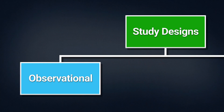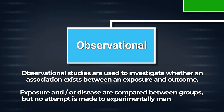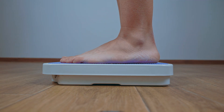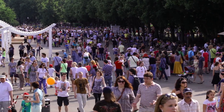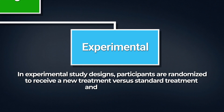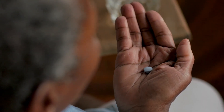Observational and experimental studies differ in a significant way. Observational studies investigate whether an association exists between an exposure and outcome. Exposure and disease are compared between groups, but no attempt is made to experimentally manipulate or interfere with the outcome. An exposure can be a certain behavior such as diet or smoking, while the outcome is usually a disease such as Alzheimer's disease. In experimental study designs, participants are randomized to receive a new treatment versus standard treatment and/or placebo, and then outcomes are compared between groups. The treatment is often a drug or a preventive program.